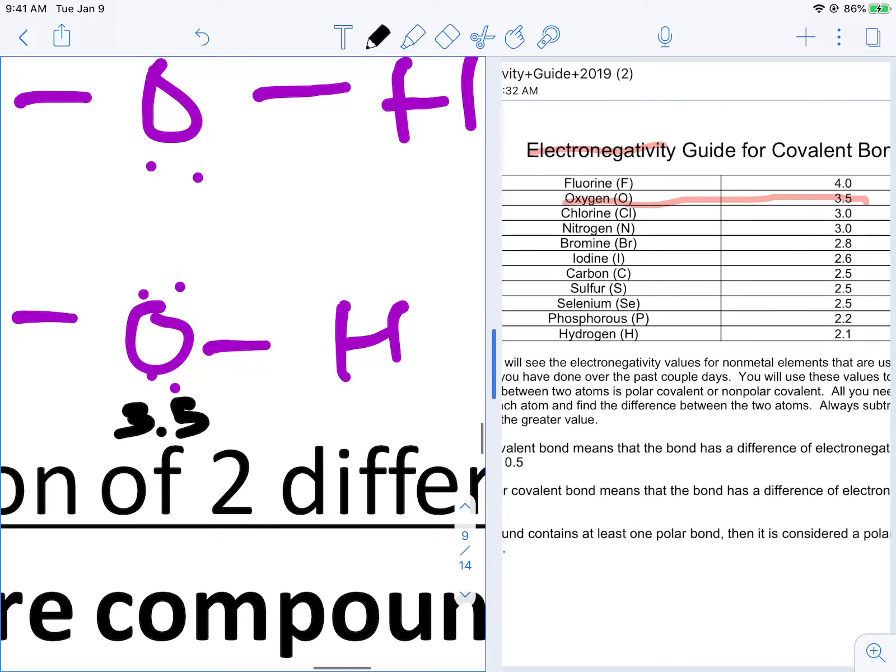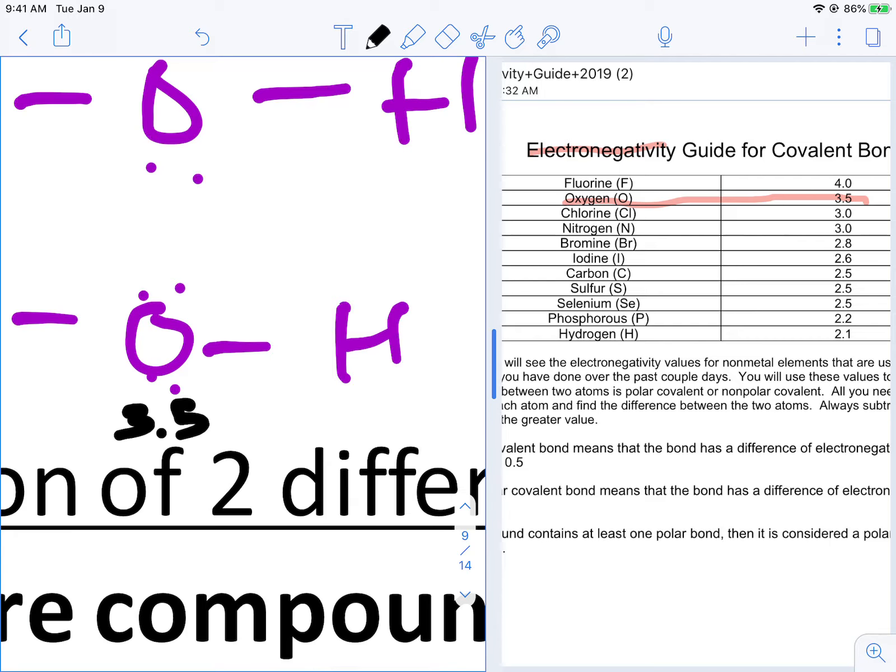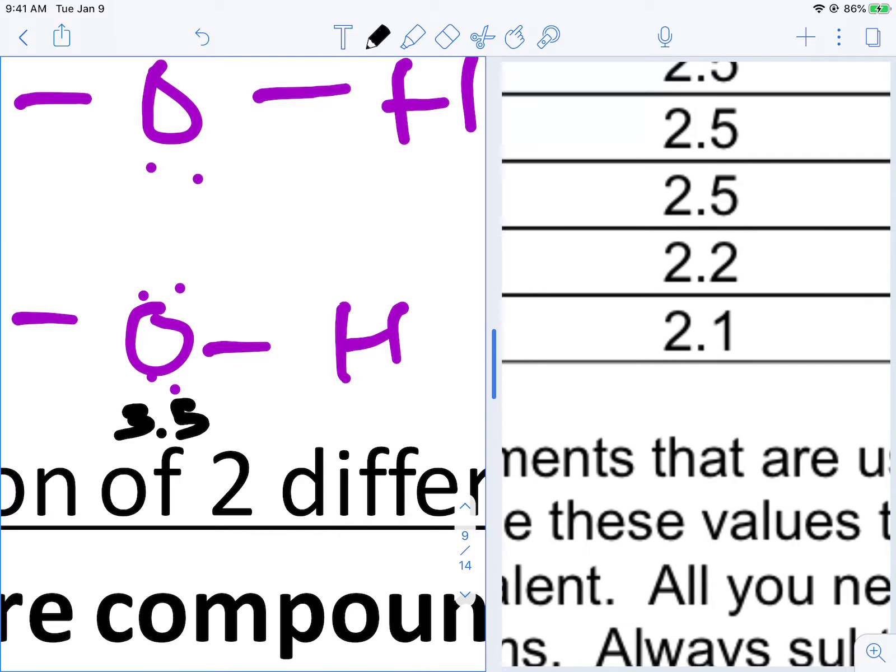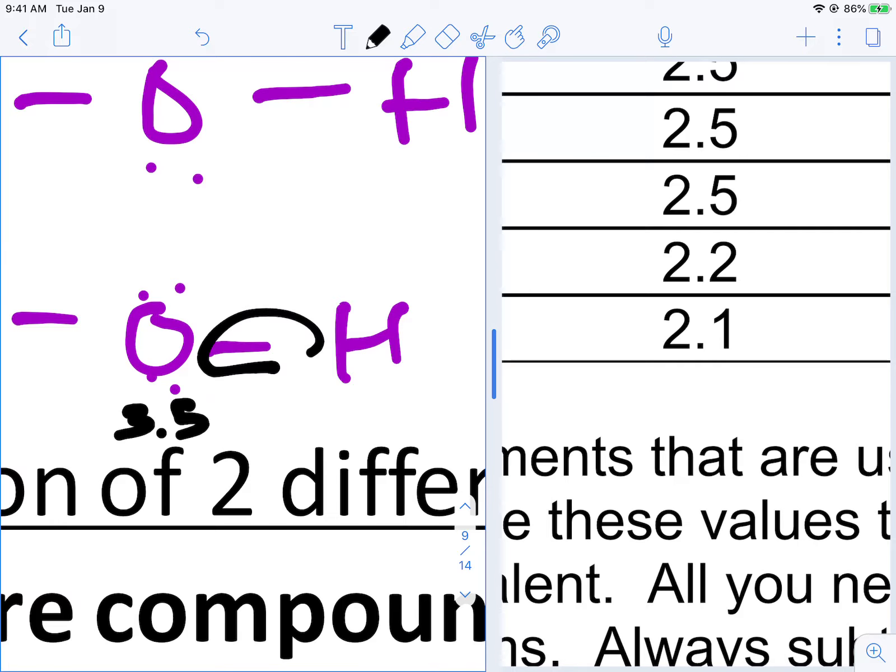So that means that we write a 3.5 by oxygen. Now to determine whether or not we're sharing unequally or if we're not having a tug of war going on, we've got to see what hydrogen's doing. Hydrogen has a much weaker pull. So it's not pulling as hard on this bond right here. It's not pulling very hard on the tug of war.